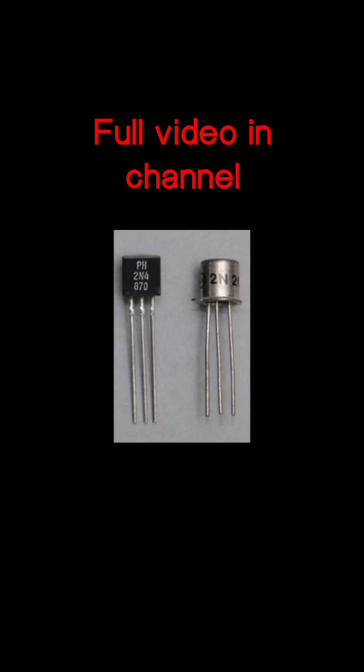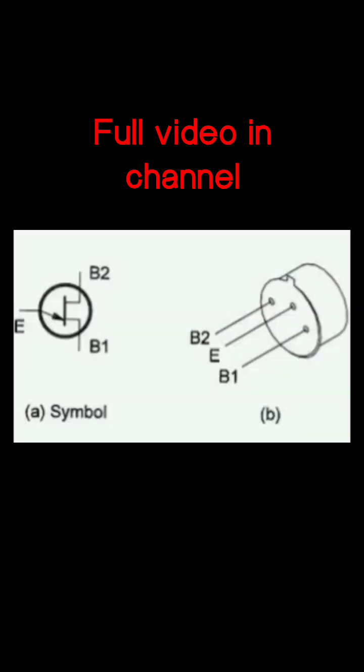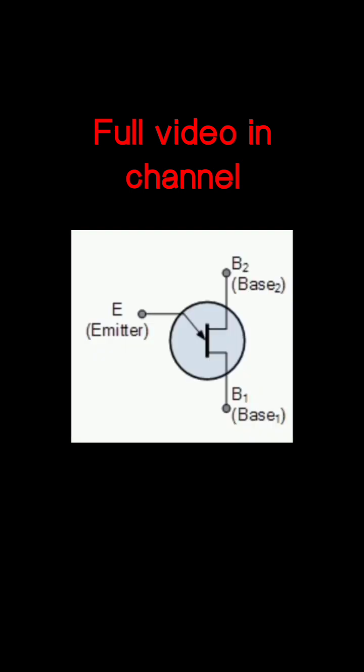The uni-junction transistor is a three-lead electronic semiconductor device with only one junction. It acts exclusively as an electrically controlled switch.